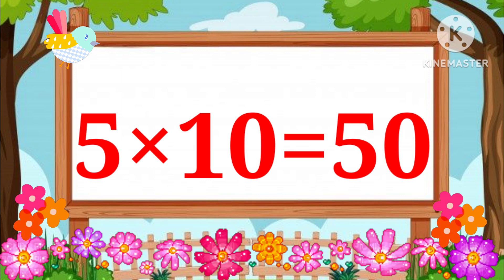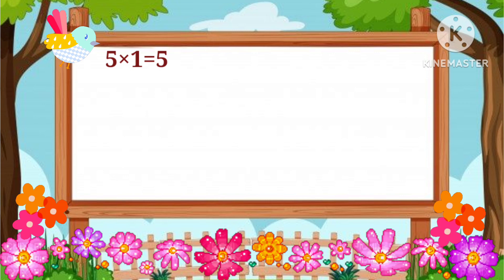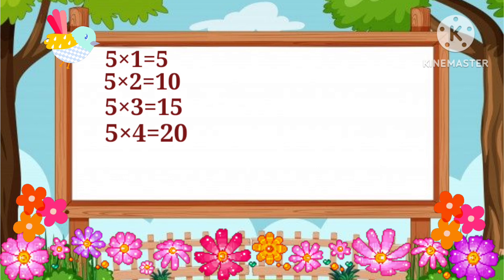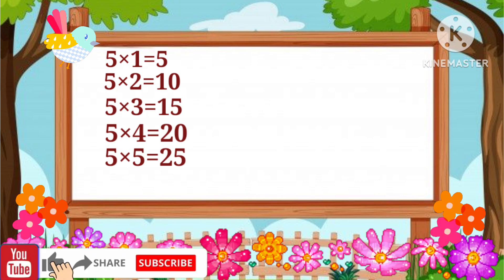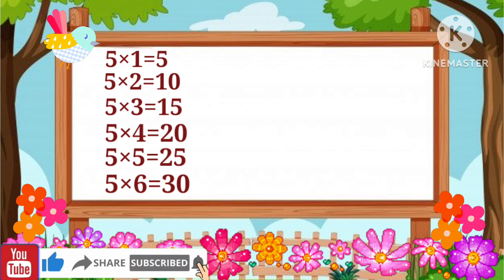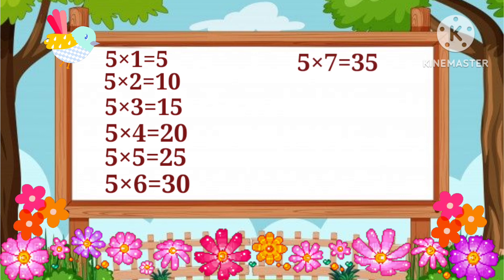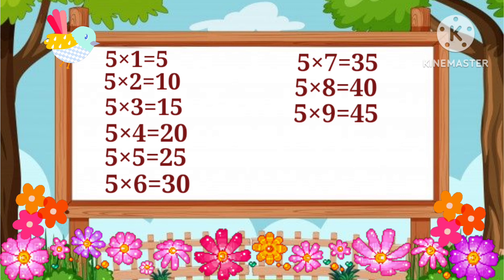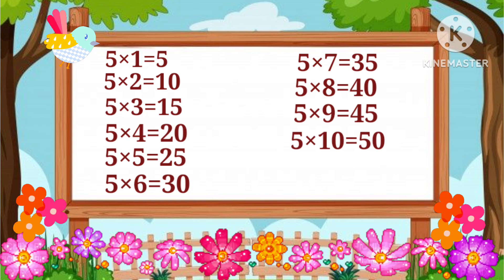5 one's a 5, 5 two's a 10, 5 three's a 15, 5 four's a 20, 5 five's a 25, 5 six's a 30, 5 seven's a 35, 5 eight's a 40, 5 nine's a 45, 5 ten's a 50.